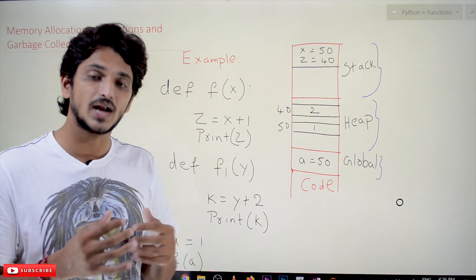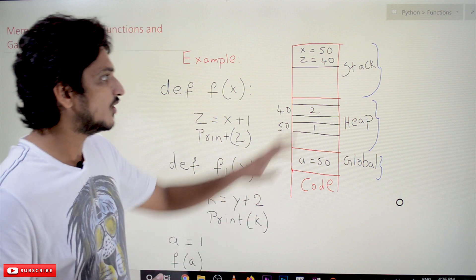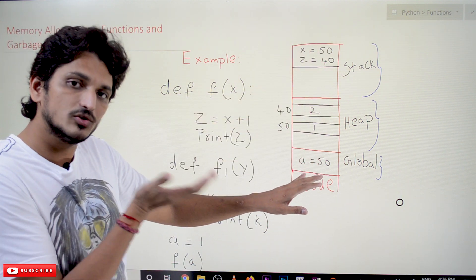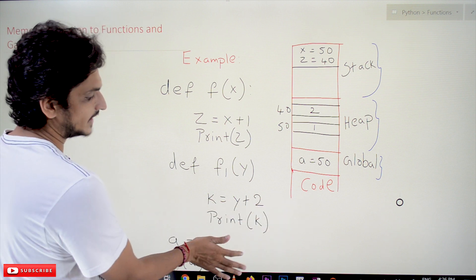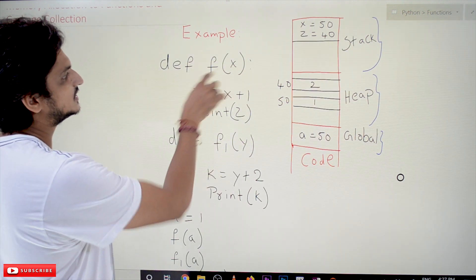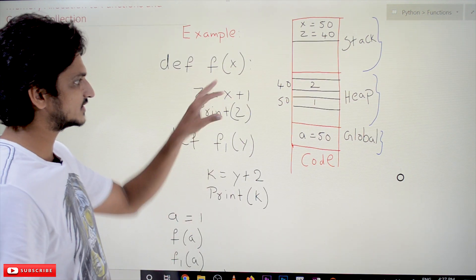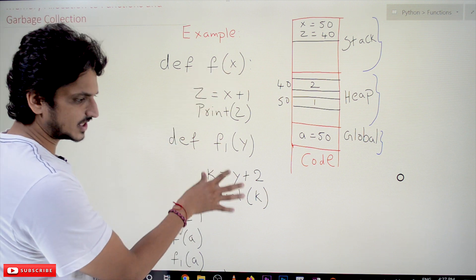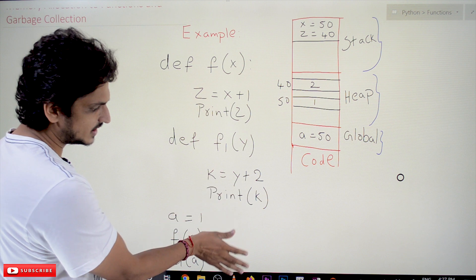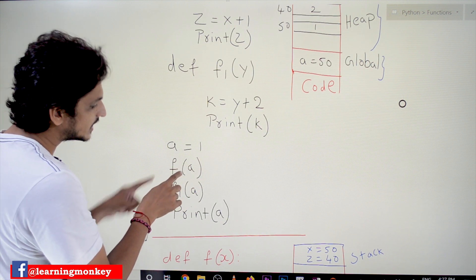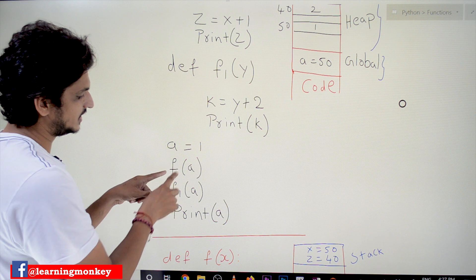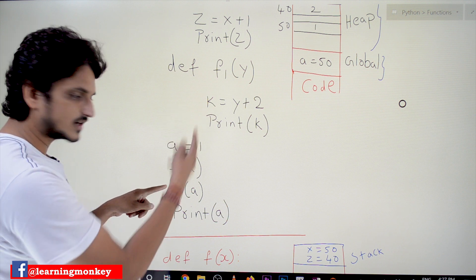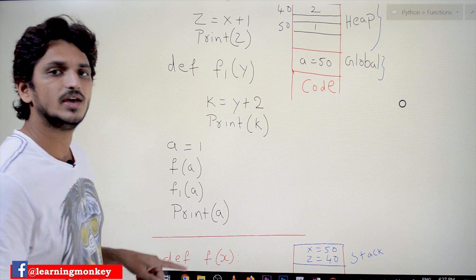Let us take an example and understand step by step what these spaces are and how execution works. The example we consider here has a function f(x) with its body, and a function f1(y) with its body. In our main code, a is equal to 1, we call the function f, then f1(a), and then we display the variable a.